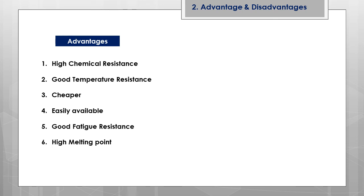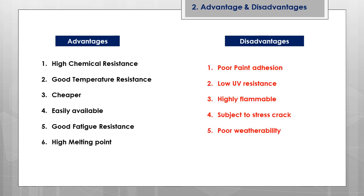The advantages of PP include high chemical resistance, good temperature resistance, very low cost, easy availability, good flex resistance, and a high melting point. The disadvantages include poor paintability, low UV resistance, being highly inflammable, susceptibility to stress cracking, and poor weatherability.